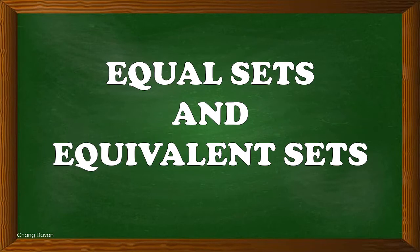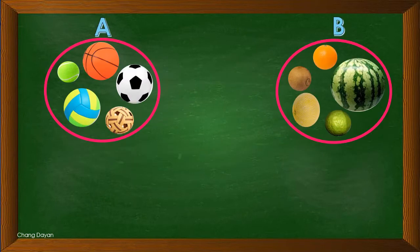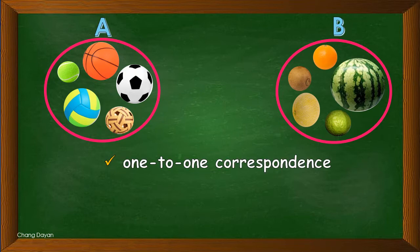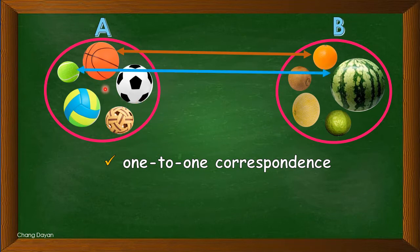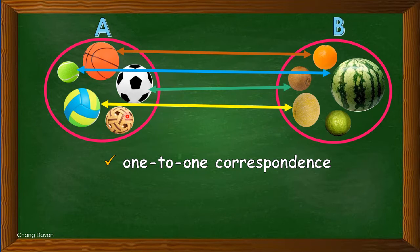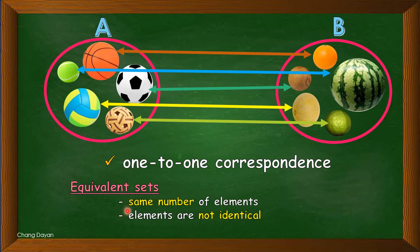Good day everybody. For today's lesson we'll have equal sets and equivalent sets. Suppose I have here two circles. For circle A, we have a group of balls; for circle B, we have a set of fruits. Each has one-to-one correspondence, meaning this ball corresponds to orange, while this ball corresponds to watermelon, this ball corresponds to kiwi, this ball corresponds to melon, and this ball corresponds to guava. We can consider this as an equivalent set.